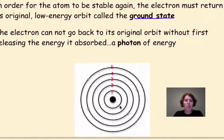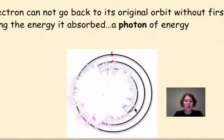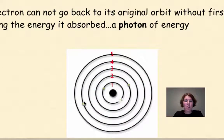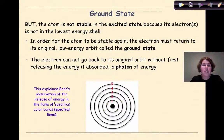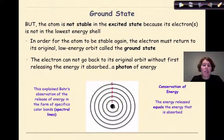So here again, we have another little simulation. These electrons are going to go from the excited state back down to ground state and release energy in the form of light. Here's that electron moving down to a lower energy level, and another one, and finally one more, going back down to the ground state. As a result of this, this explained Bohr's observation of the release of energy in the form of specific color bands, or spectral lines. The key thing to remember here is conservation of energy — the amount of energy absorbed as the electron went from ground state up to excited state was equal to the amount of energy released as the electron went from the excited state back down to ground state.